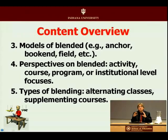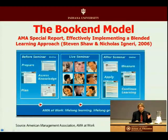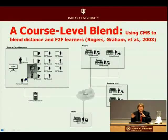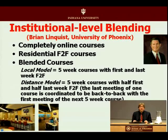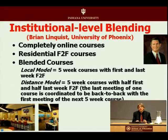Those are decisions made by administrators as opposed to by the instructor. You can also blend by alternating face-to-face and online classes, or by supplementing — which is what most of you are going to do. You might have online experiences to start and end, like with the bookend model. The University of Phoenix uses an institutional model where local students attend face-to-face the first and last weeks, while in their distance model, they only meet a half week at start and end, with four weeks online. That's an institutional, administrative decision.